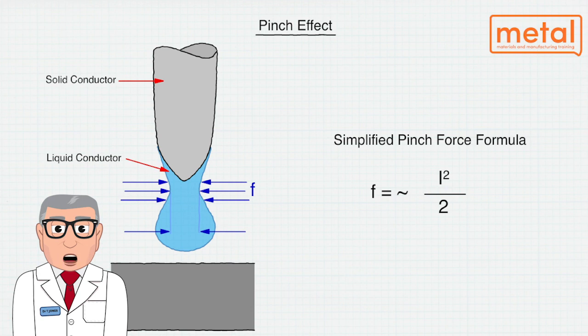When the molten tip drop is about to detach, the magnetic forces act away from the point of necking in both directions. The drop which has started to separate will be given a push as a consequence of this, which increases the rate of separation.